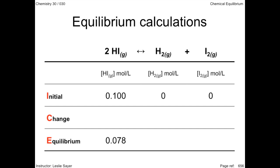The row headers represent the initial concentrations of substances given in the question, the change in concentration of reactants and products, and the equilibrium concentrations when the reaction is finished. The top of the table shows the balanced chemical equation with the reactants and products arranged as column headers. The initial concentrations under each substance are usually provided in the question. We assume the initial concentrations of the products are zero — that is, before the reaction begins, we only have reactants.